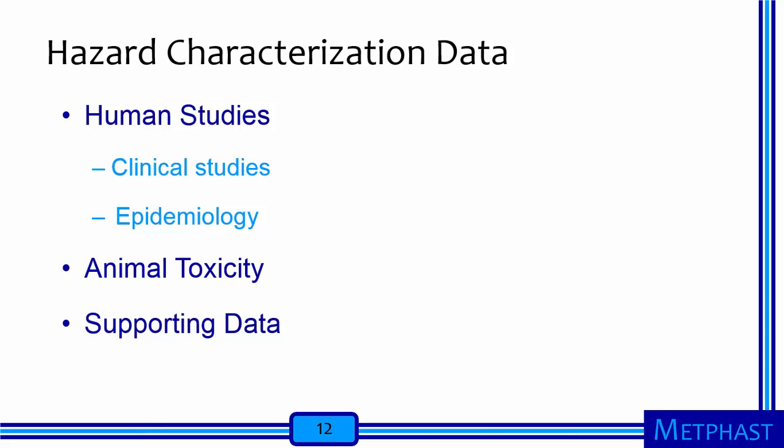Animal toxicity studies are based on the long-standing assumption that effects in humans can be inferred from effects in animals. Supporting data can come from studies looking at the pharmacokinetics — that is, the study of the absorption, distribution, metabolism, and excretion of chemical substances in the body. They can come from the mechanism of action, or the understanding of the precise sequence of biological events that causes a particular adverse event. They can come from structure activity relationships — that is, the relationship between the chemical structure of a molecule and its biological activity. And they can also come from in vitro studies that are studies of the effect of the hazard using tissue level or cellular level experiments.